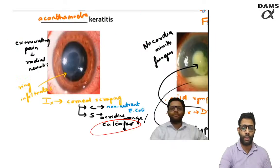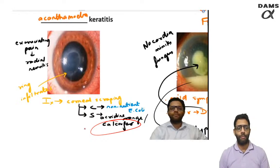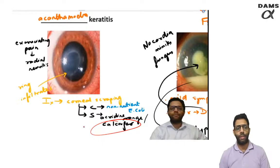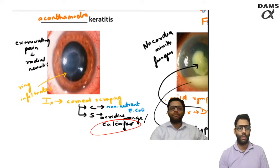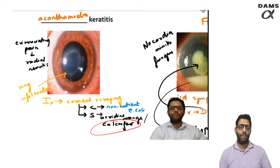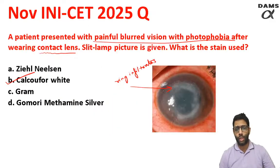Treatment is propamidine plus polyhexamethylene biguanides, given one hourly. From class, acanthamoeba and fungus are compared: in acanthamoeba, signs are less but symptoms are more — excluding severe pain. In fungal keratitis, signs are more and symptoms are less. This also is an acute red eye question because that is a corneal ulcer.